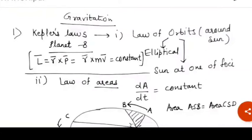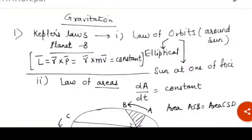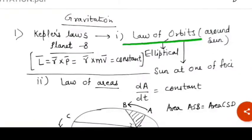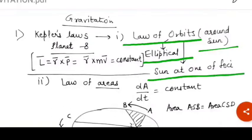This law says three statements, known as three laws. First law is called as law of orbits. It says that every planet revolves around the sun in elliptical orbit having sun at one of its foci.